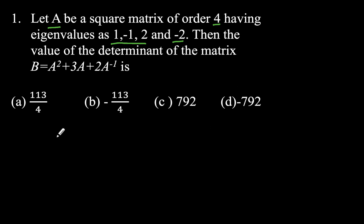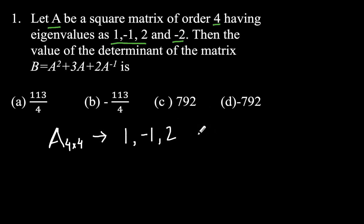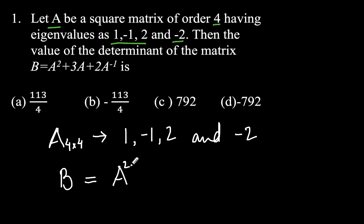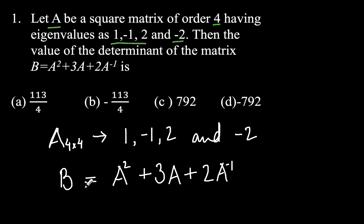What is given: we have a square matrix A of order 4, its eigenvalues are 1, -1, 2, and -2, and matrix B is defined as A² + 3A + 2A⁻¹. We need to find the determinant of this matrix.